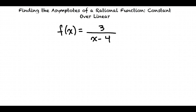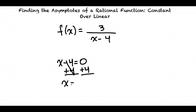Let's take a look at an example: Find the vertical and horizontal asymptotes of f(x) = 3 over (x minus 4). Vertical asymptotes are determined by setting the denominator equal to 0 and solving for the variable. This is because we cannot divide any number by 0, so the graph will not pass the line containing x values that make the denominator 0. This is similar to finding values that make an expression undefined. If we set the denominator equal to 0, we get x minus 4 = 0. By adding 4 to both sides, we get x = 4. This means we have a vertical asymptote at the line x = 4.